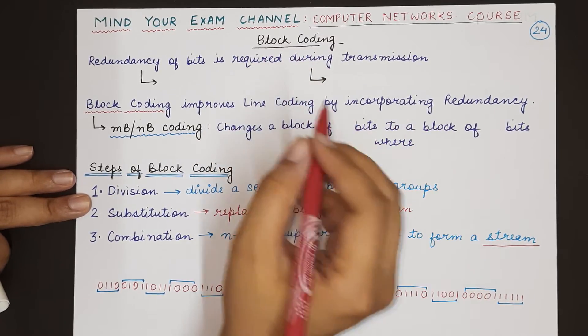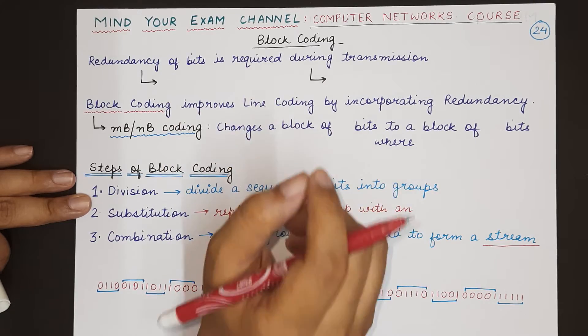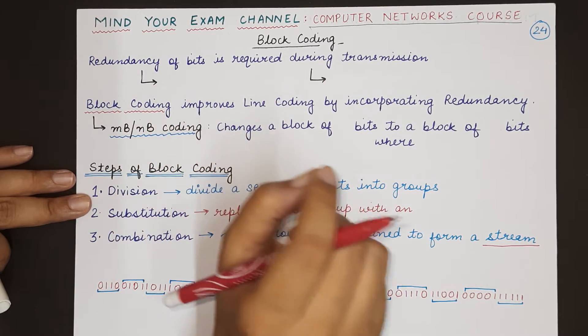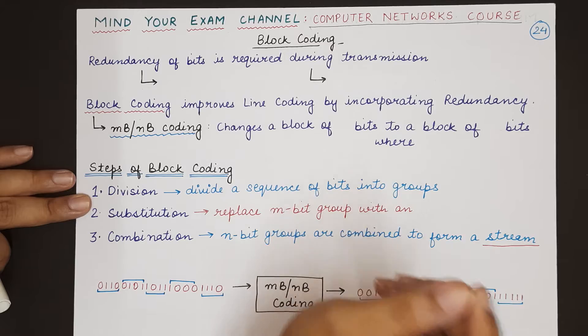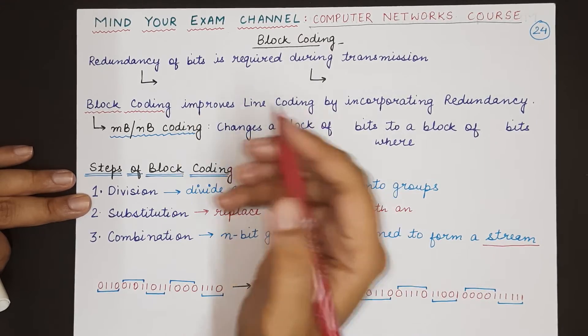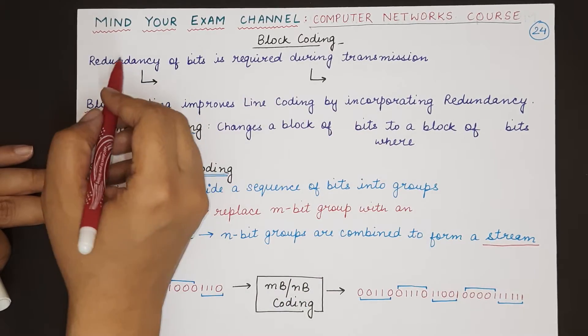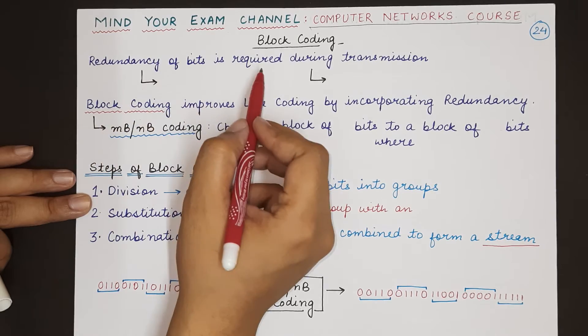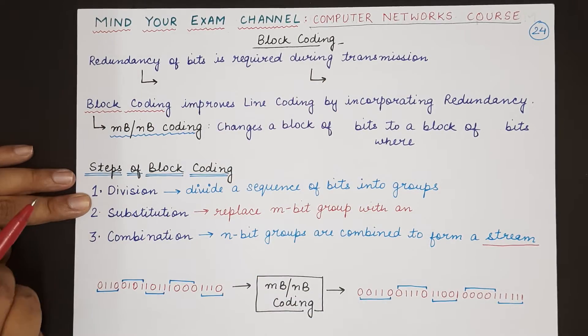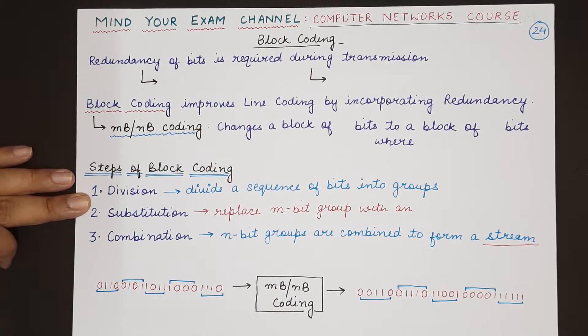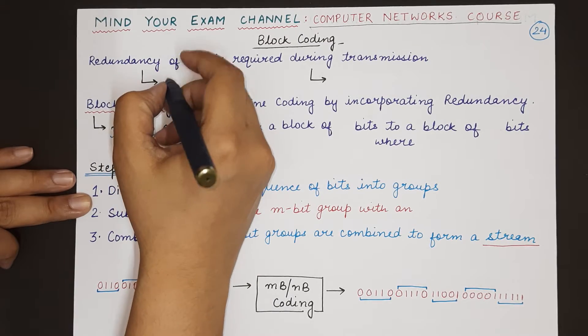Block coding is a process of incorporating redundant bits into the digital bits or binary bits that have to be transmitted. Redundant means extra, and redundancy of bits is basically required during transmission because of two main reasons.